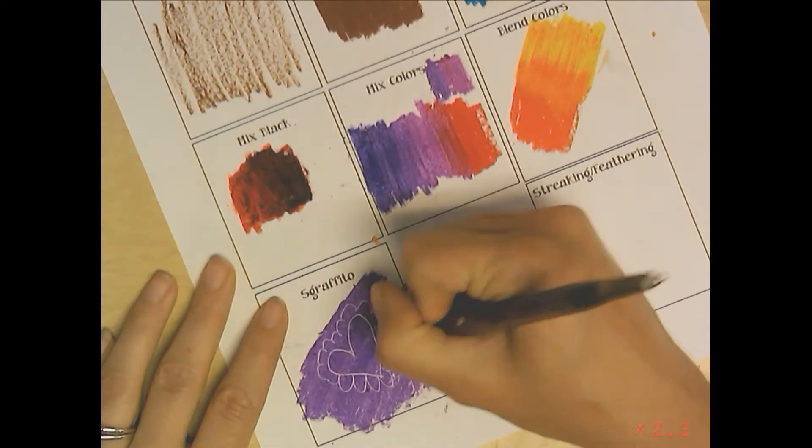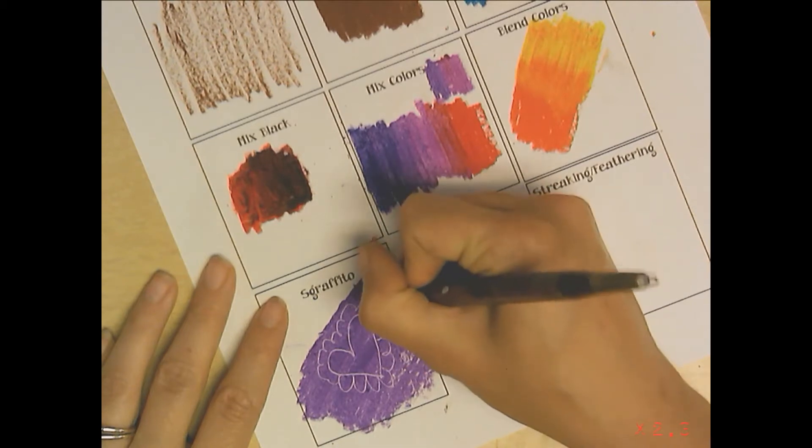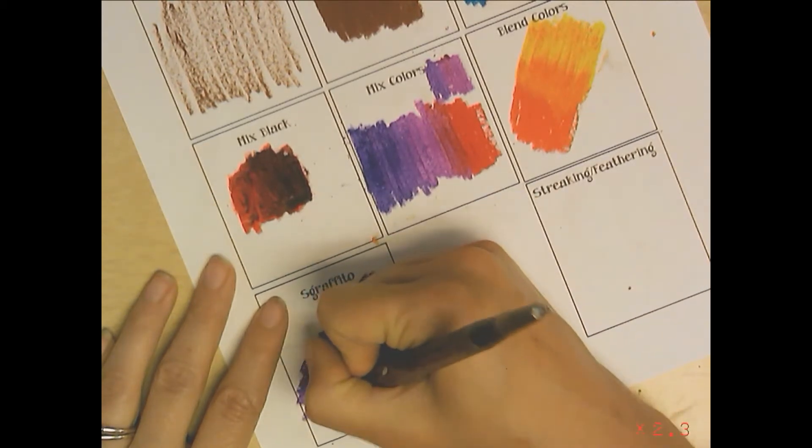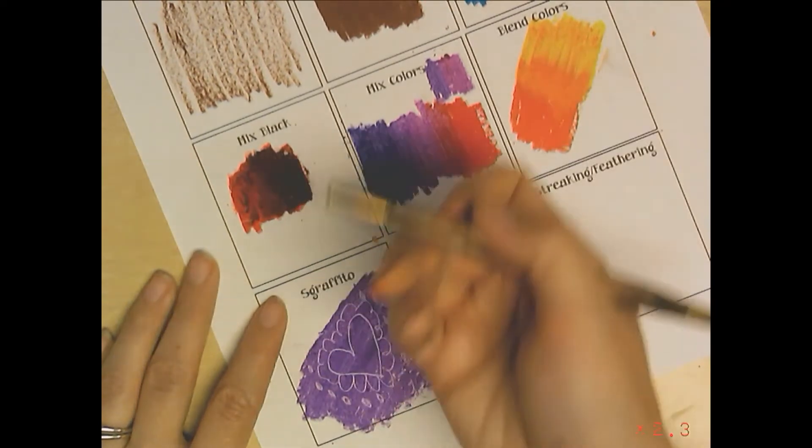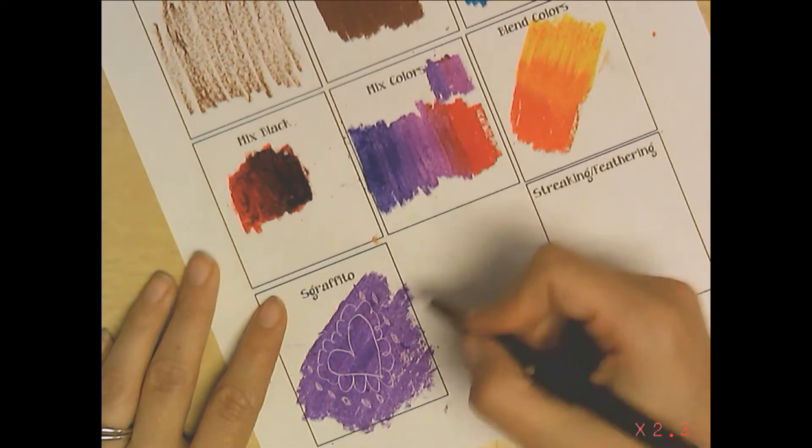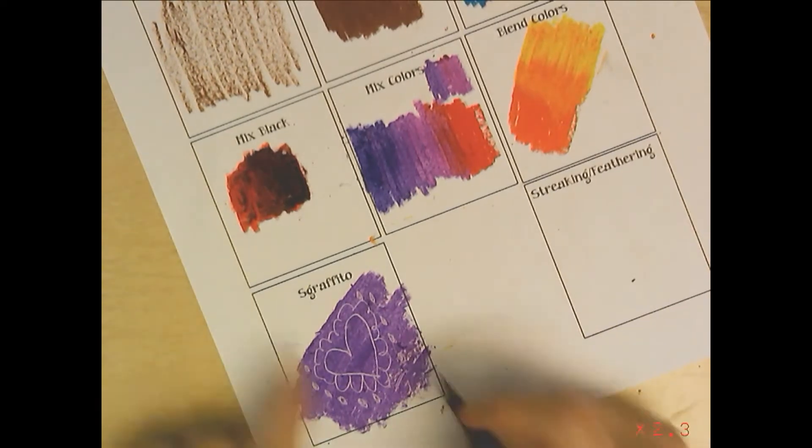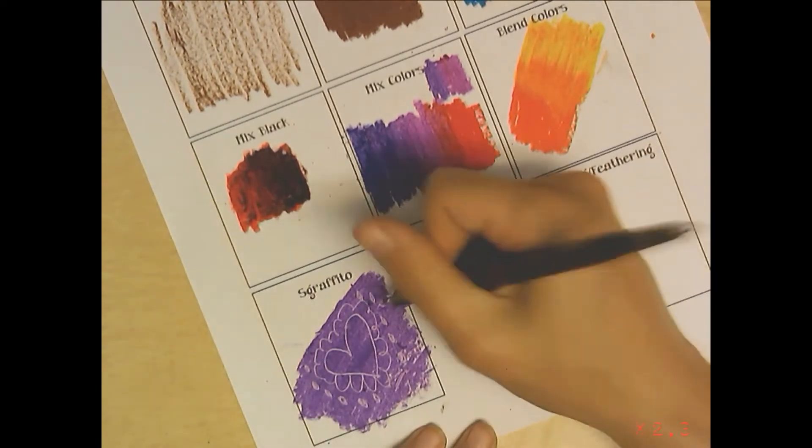Whatever it is you want to make, you can make a whole artwork. You can cover a piece of paper in oil pastel and then draw your piece with a type of stylus by sgraffitoing. Sgraffito means to scratch, so that's what we're doing, we're scratching the oil pastel away.